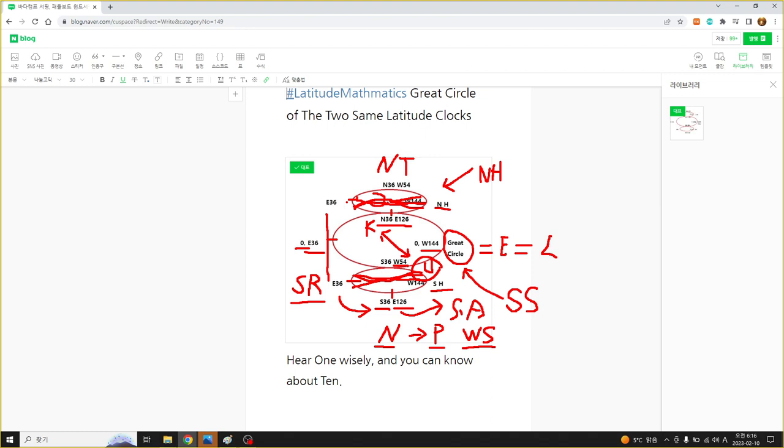We can figure out many things from two same latitude clock and great circle. And in details, we can know about the area, the whole area. What do we know about the latitude clock? And there are interesting things. It's about knowing about the ocean and the land at the latitude.